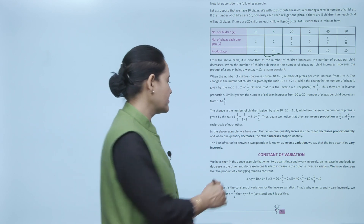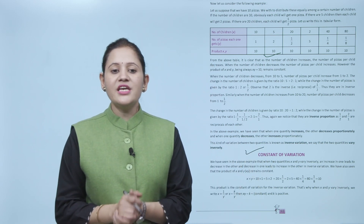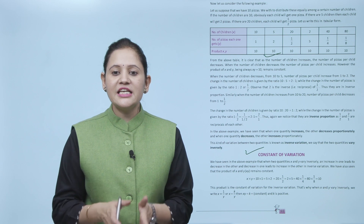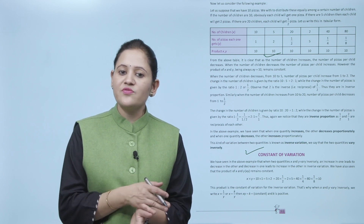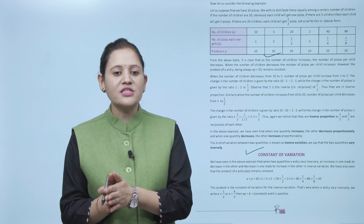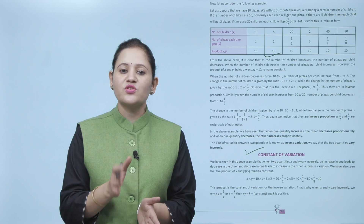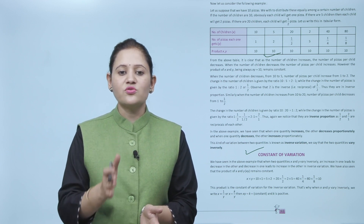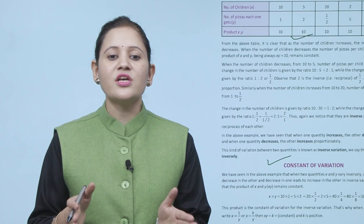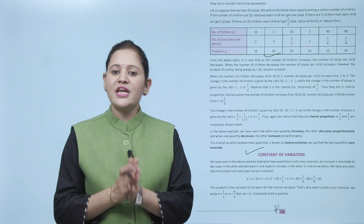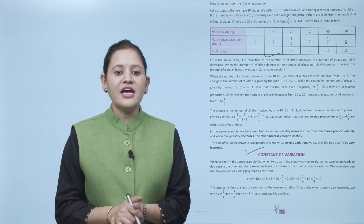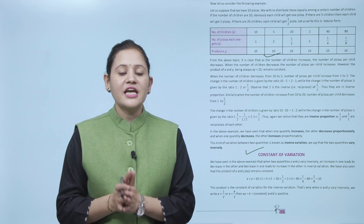Constant of variation in inverse variation: when two quantities x and y vary inversely, their product x×y remains constant: 10×1 = 5×2 = 20×(1/2) = 2×5 = 40×(1/4) = 80×(1/8) = 10. This constant product k is the constant of variation. So x = k/y, meaning x×y = k, where k is a positive constant.